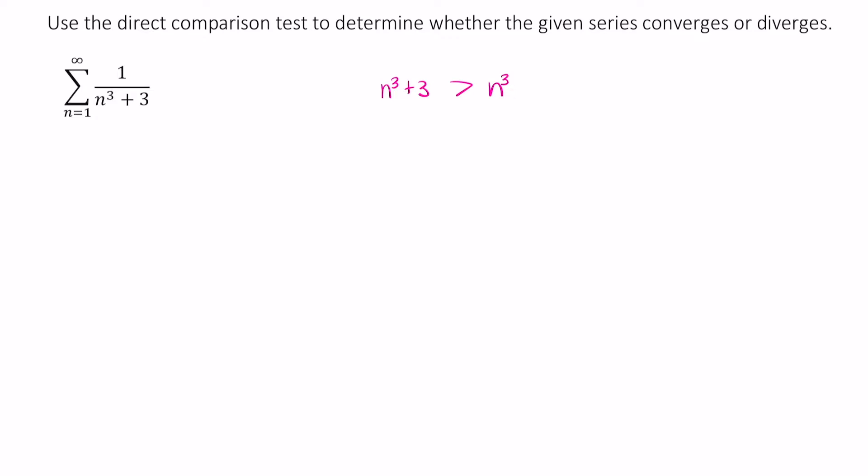So then it follows that 1 over n cubed plus 3 has to be smaller than 1 over n cubed. So this is my comparison.